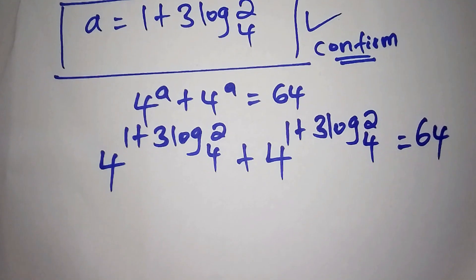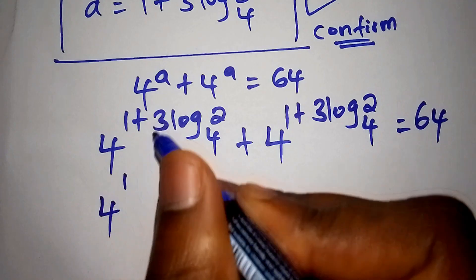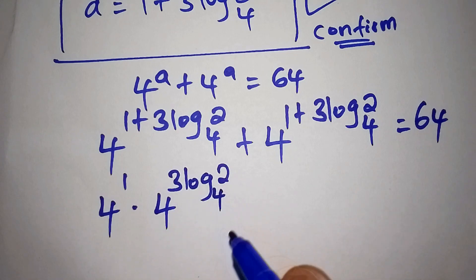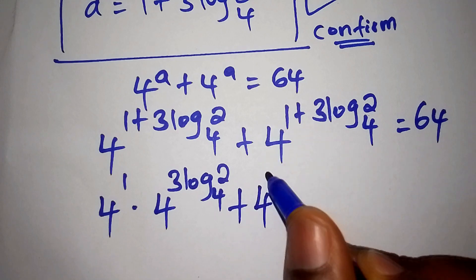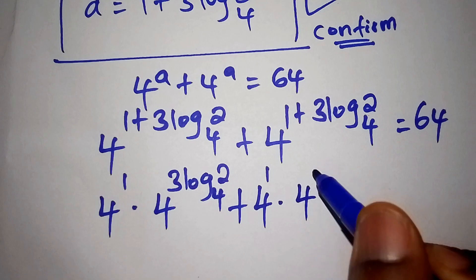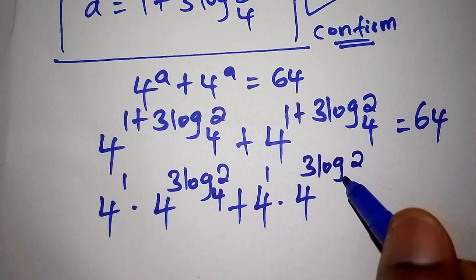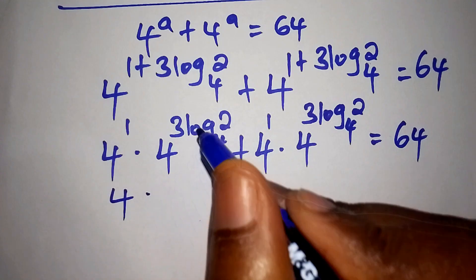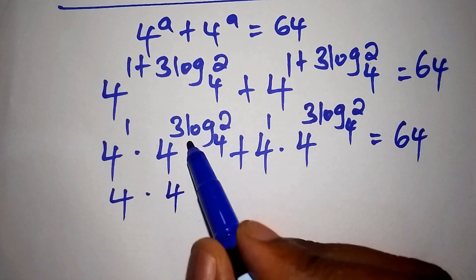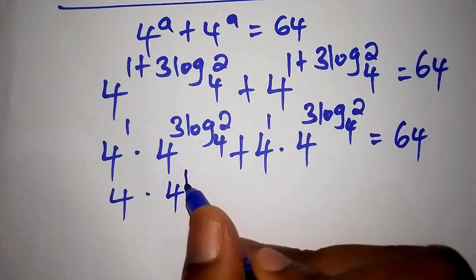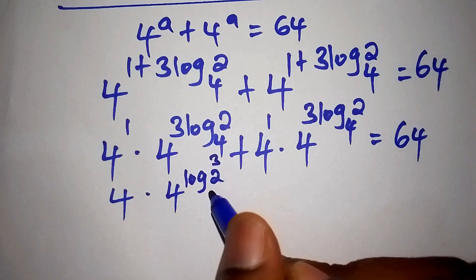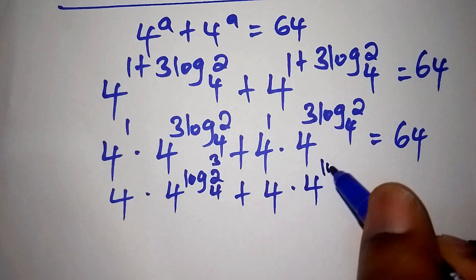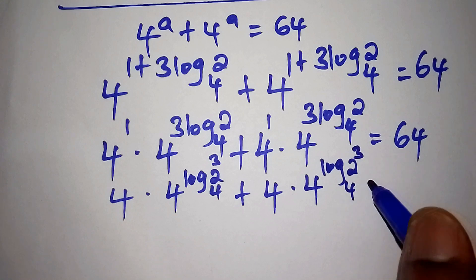We can write this by splitting the exponent: 4 to the power of 1, then the plus changes to multiplication according to the law of logarithm, times 4 to the power of 3 log₄2. The same applies to the second term: 4 to the power of 1, times 4 to the power of 3 log₄2, equals 64. Here, 3 log of 2 to the base of 4 can be rewritten as 4 to the power of log₄(2³), and the log base 4 cancels with the base 4, giving 2 to the power of 3, which is 8.